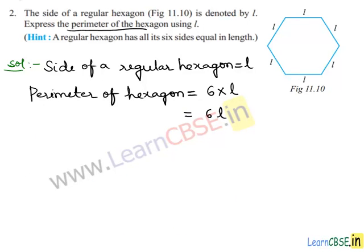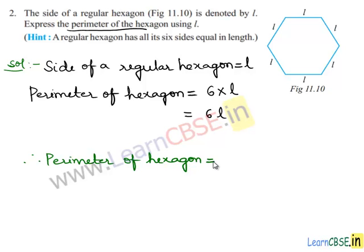Therefore, the perimeter of a hexagon is equal to 6L, since L is the side of the regular hexagon.